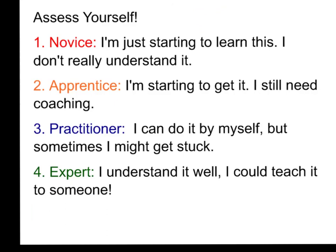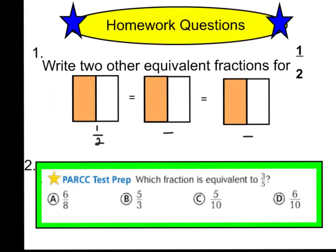Level two is apprentice. It says, I'm starting to get it, but I still need coaching. Practitioner is level three. You can already do this by yourself, but you might get stuck sometimes. And level four is an expert. You really understand this well that you could teach it to someone. And here are your two questions again. Go ahead and work on these, and tomorrow in class, we're going to be talking about equivalent fractions and doing many fun activities to get better at understanding models with equivalent fractions. Have a great night.